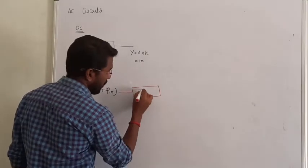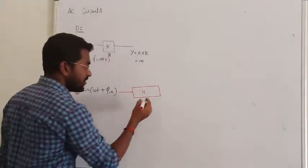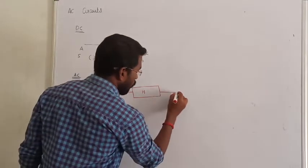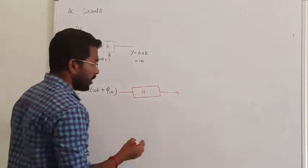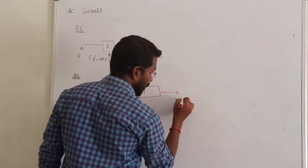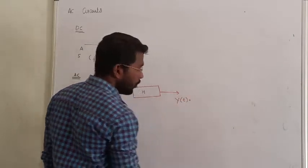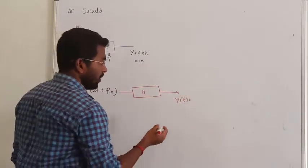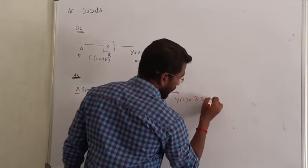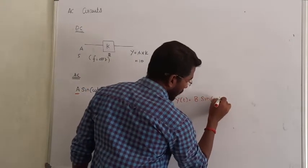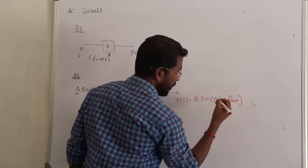Let me consider this system is H. What is the output of this system? Let me denote it as y(t). Let me generally represent it as B times sin(ωt + φ_out). Clear?